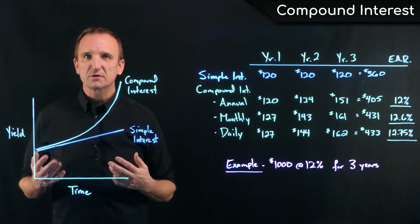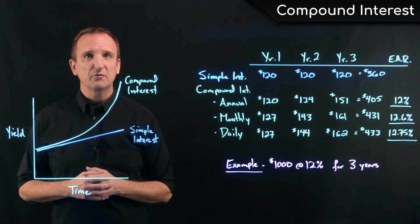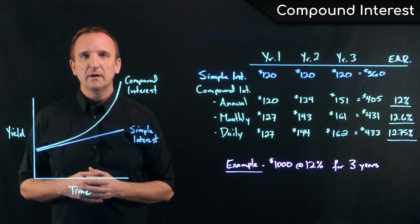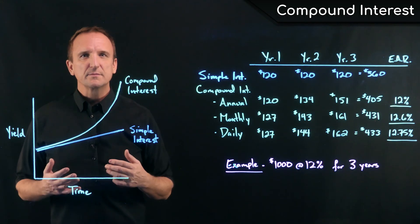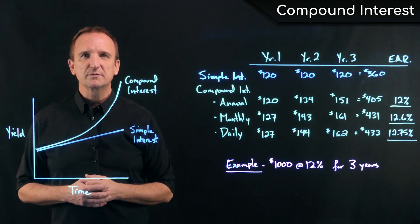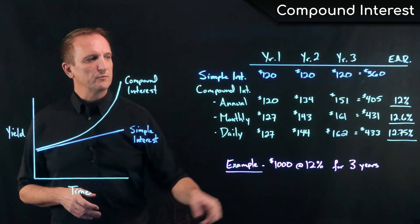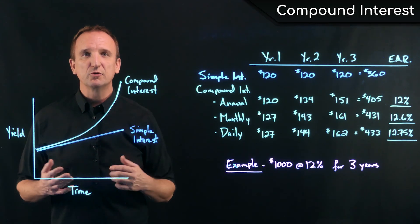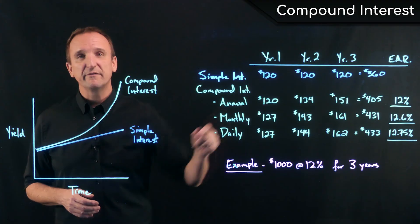But certain types of loans, some student loans out there, use daily compounding, or credit cards. And sometimes that's why you will see a stated difference between the annual percentage rate, which is the nominal rate, and the annual percentage yield, which is the effective rate.